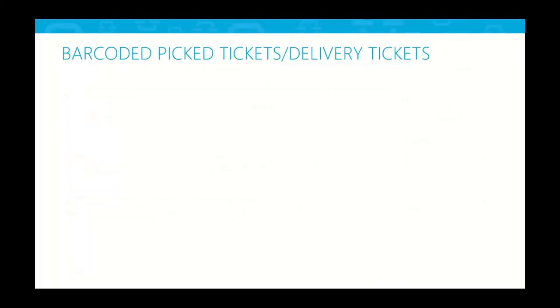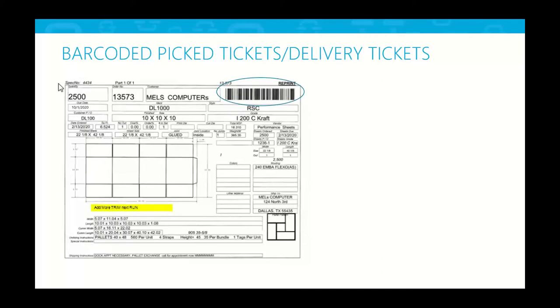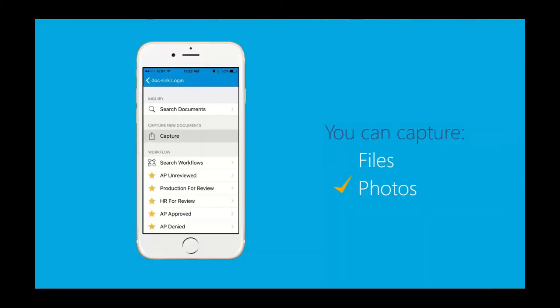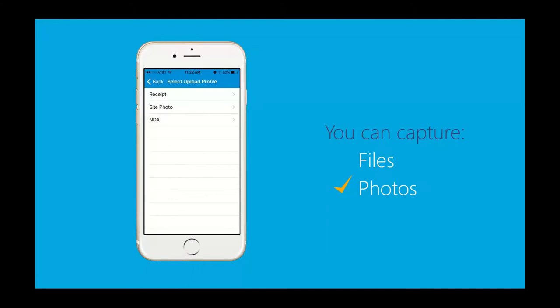For pick tickets, there are often barcodes that we can leverage using our barcode module to bring information into DocLink — no filing, no data entry, just leveraging the data on the document. The same goes for delivery receipts. If there's a signed delivery receipt with a barcode, we leverage the barcode module and bring that in. You can also capture these documents via the mobile app — if you want to capture a receipt or any other document, you can easily upload it into DocLink.